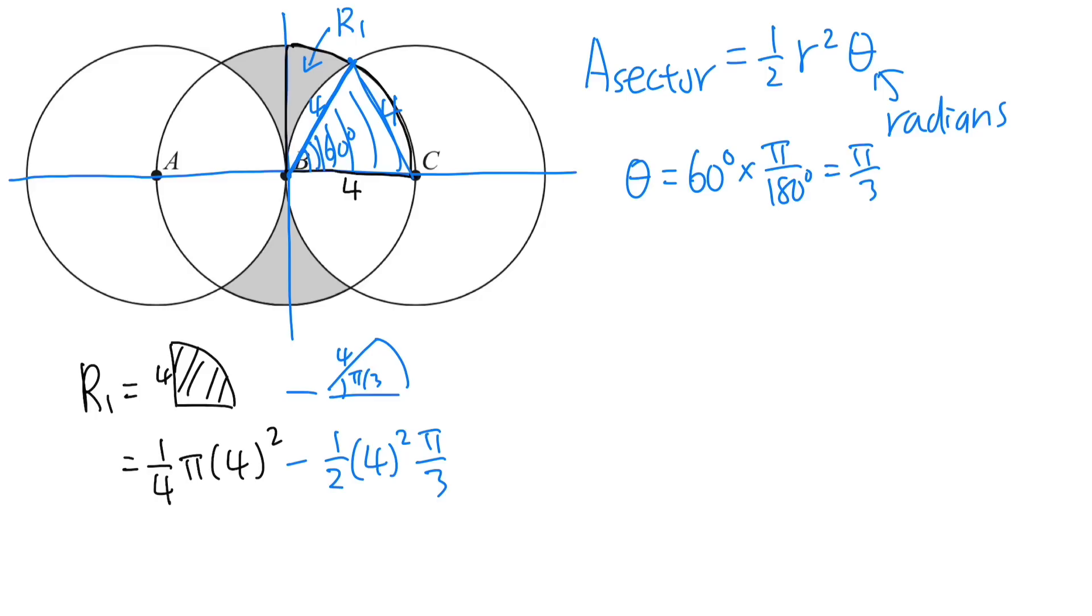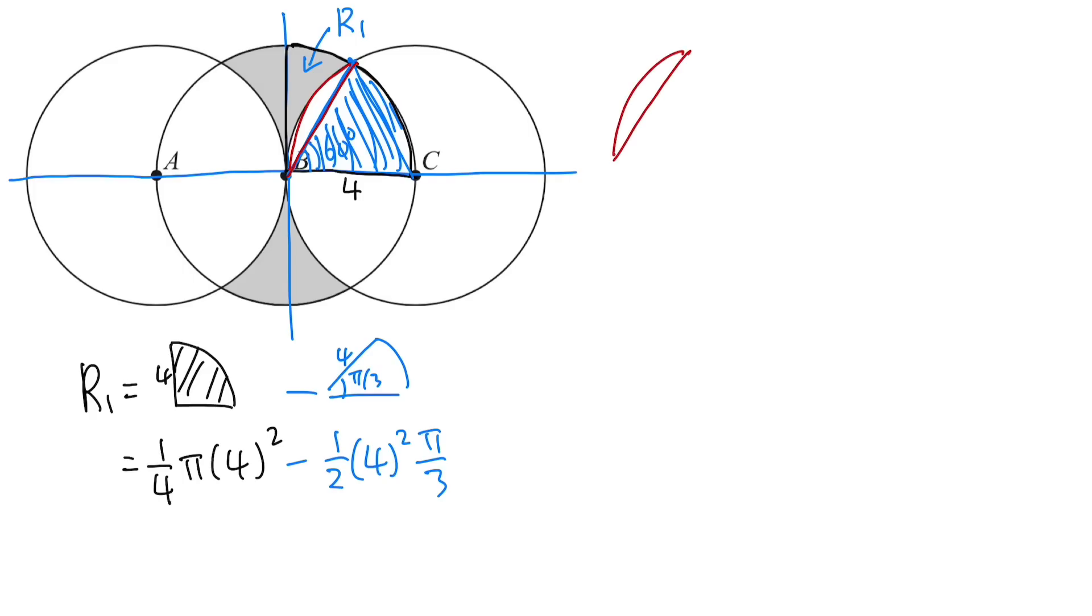We just have one more part that we will have to subtract. Remember earlier, we have taken care of the sector here already. The final part is this wedge thing. It looks like a potato wedge, in my opinion. To get the area of this part, it's actually this sector, right? It's just that if you look at it like this.